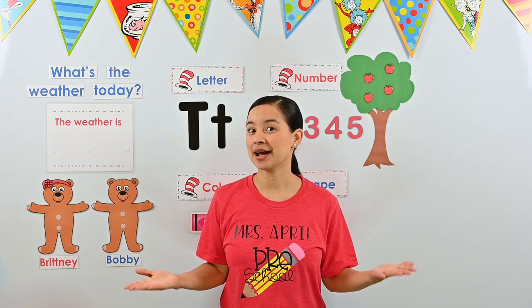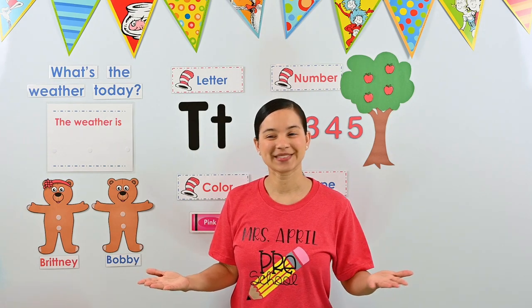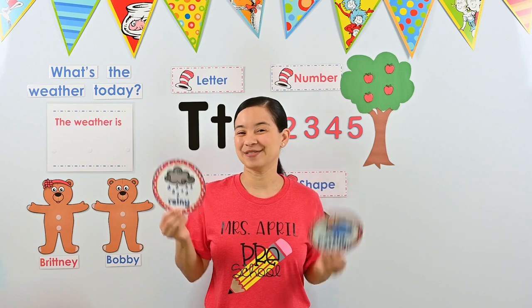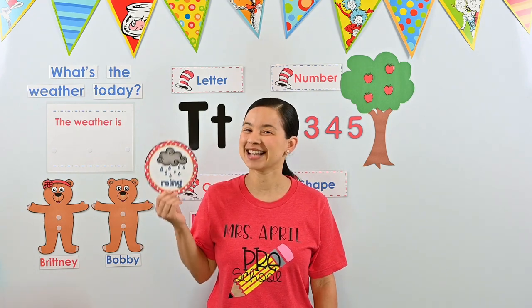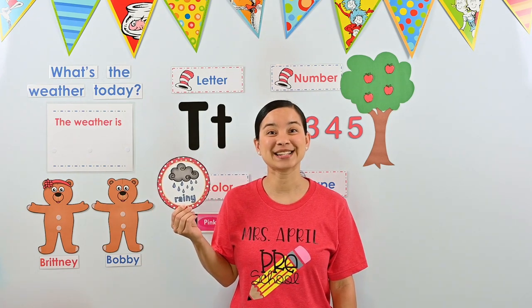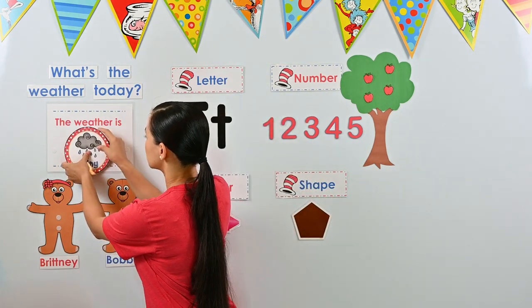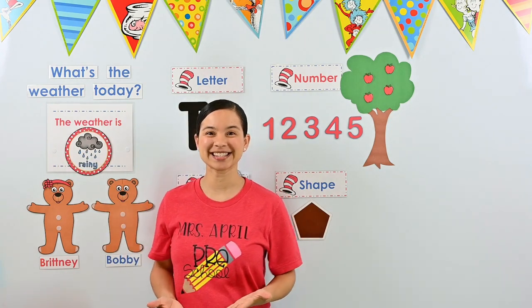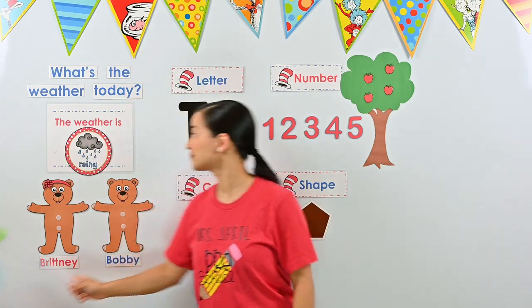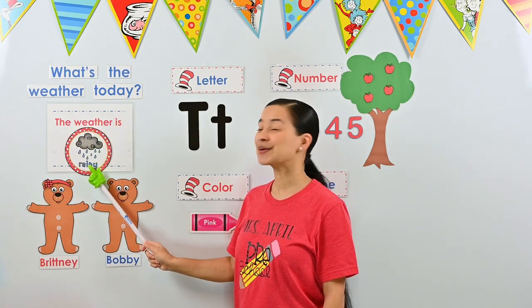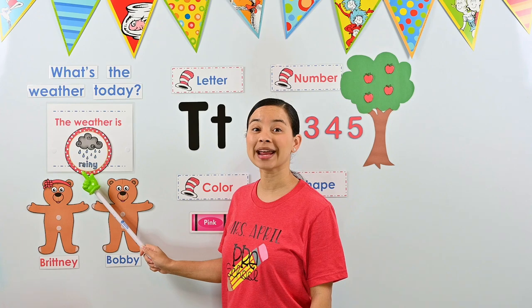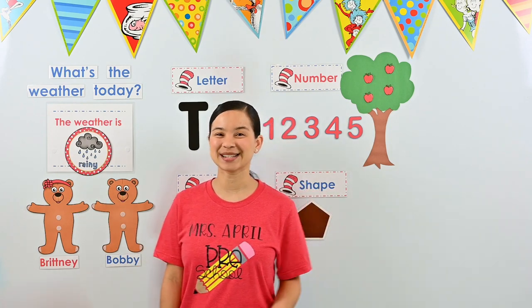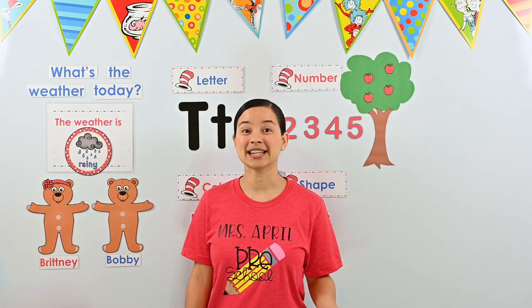First we need to pick out a picture that represents a rainy day. Which picture shows a rainy day? If you pointed to this picture, I agree. I see dark clouds with rain coming down — this is definitely a rainy day picture. Let's add it to our weather sentence. Can you help me read the sentence? The weather is rainy. Good, we'll read it one more time: the weather is rainy.